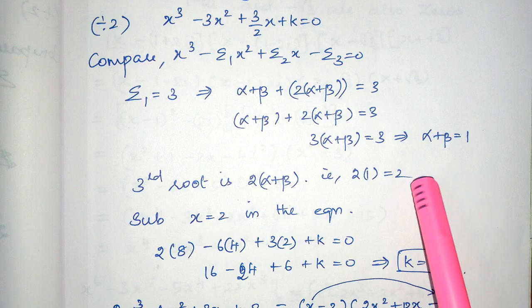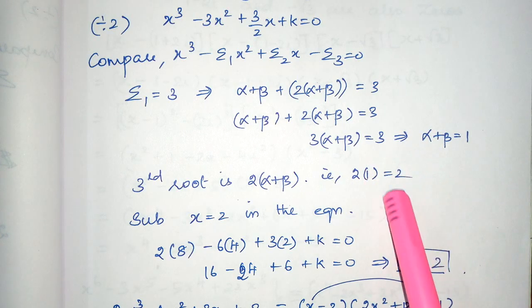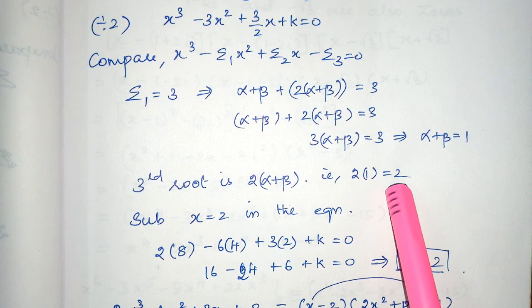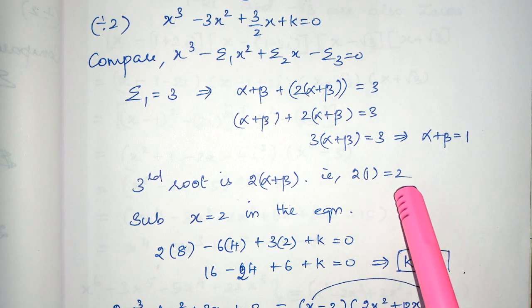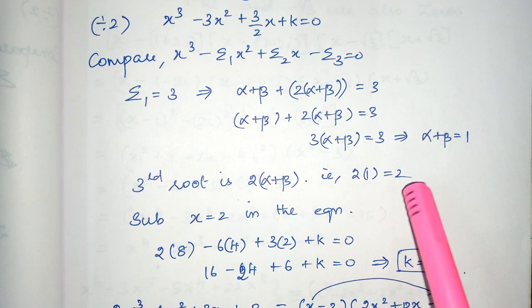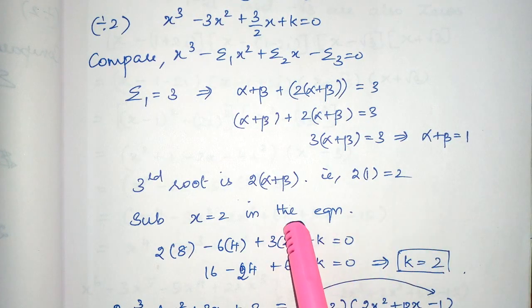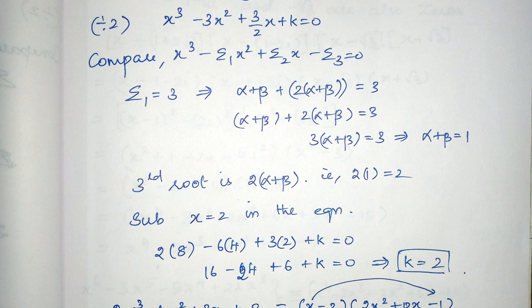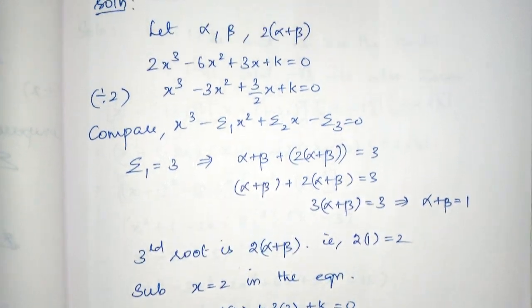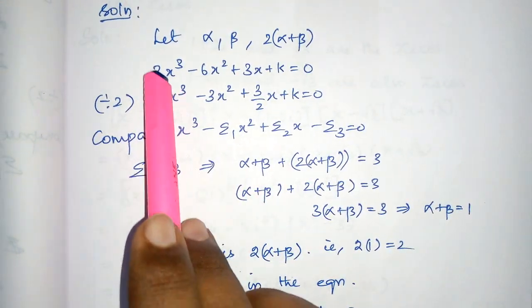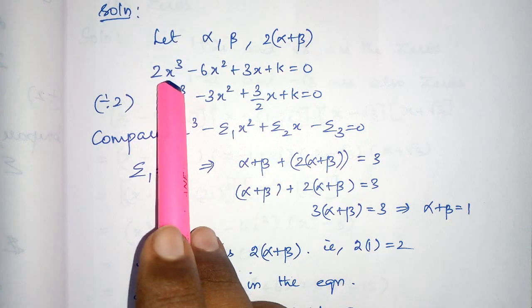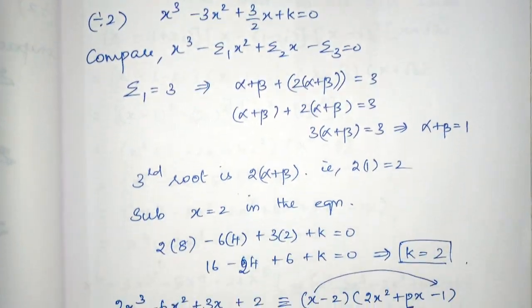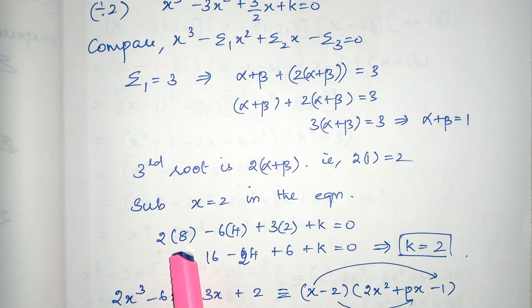Now, what we are going to do is, since the root is 2, this root will satisfy the equation, which is already known to us. So, I am going to substitute the value of these 2 in the given equation. So, this is the equation. In the place of x, I am going to substitute 2. So, I will show that. So, substituting 2 here,